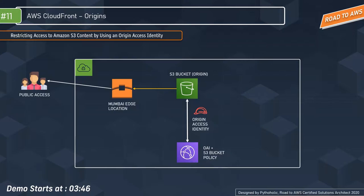As a user, you access a specific file from the edge location — for example, Mumbai — and it will check with the OAI whether this user has permission to access the file. When users access your Amazon S3 file through CloudFront, the CloudFront origin access identity gets the file on behalf of the users. If users request files directly using Amazon S3 URLs, they will be denied access.